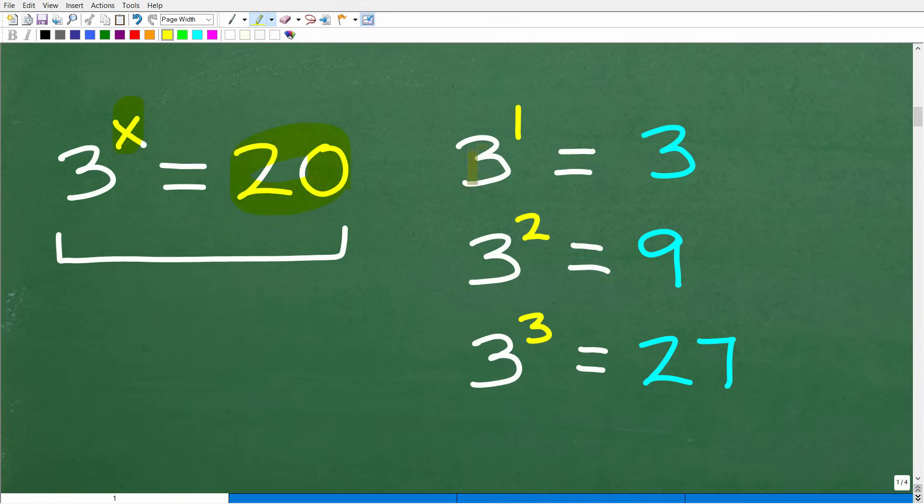So we can kind of think about this in this manner. Here is our problem. Three to the X power is equal to 20. So let's just kind of run some basic experiments here. What value of X, three to what power is going to be 20? Well, let's just start running some numbers. So three to the first power, well, that's three. Well, that's certainly not 20.